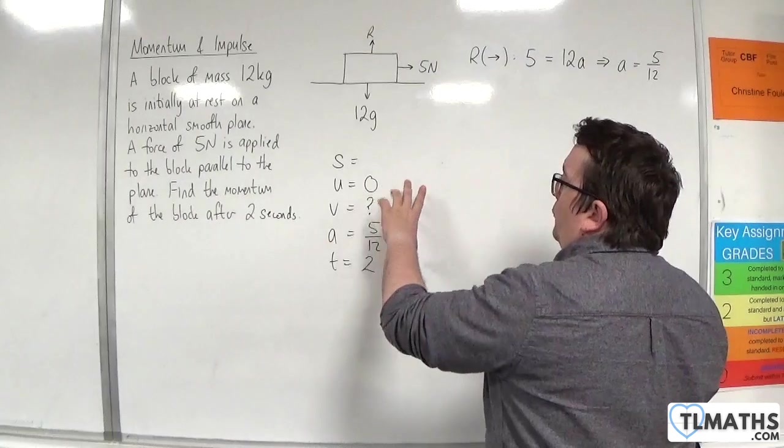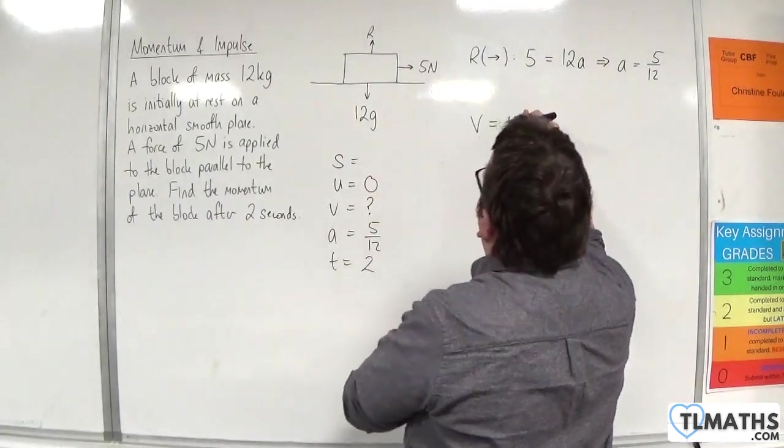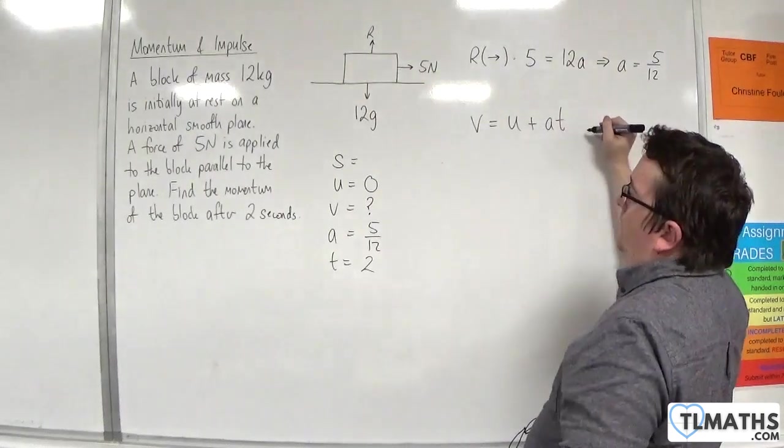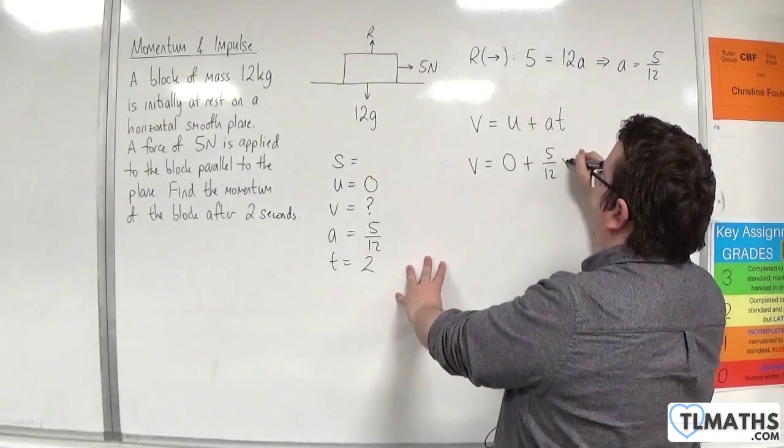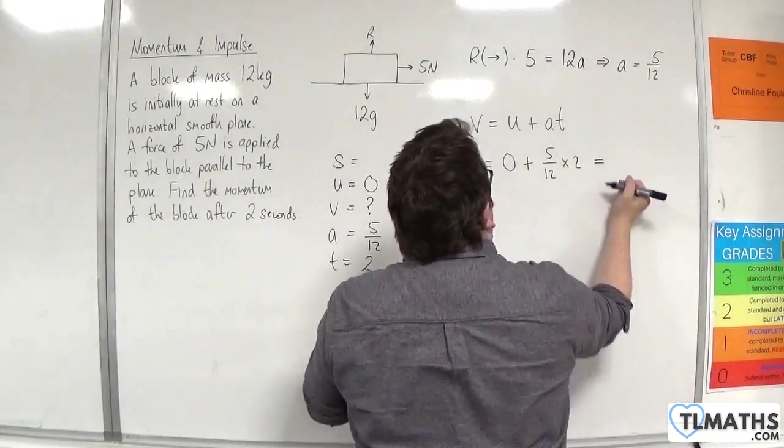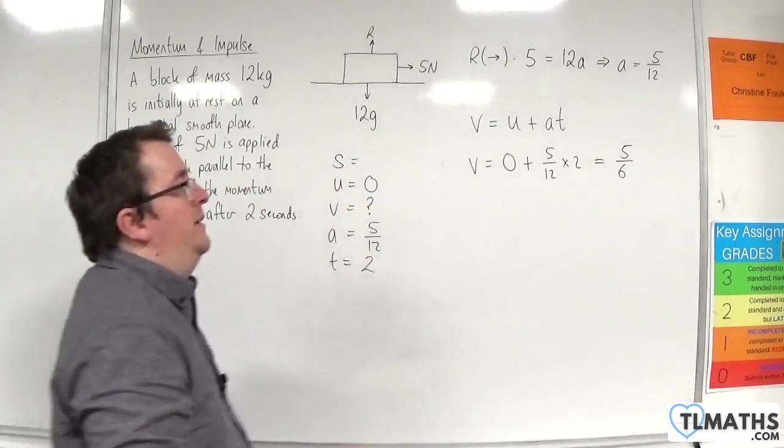So, the SUVAT formula that does not involve s is v equals u plus at. So, v is equal to 0 plus 5 twelfths times 2, and that's going to be equal to 5 sixths. And that's metres per second, so that's my velocity.